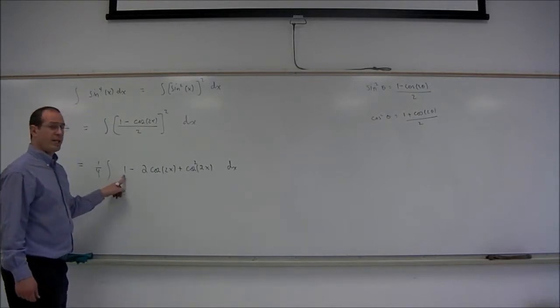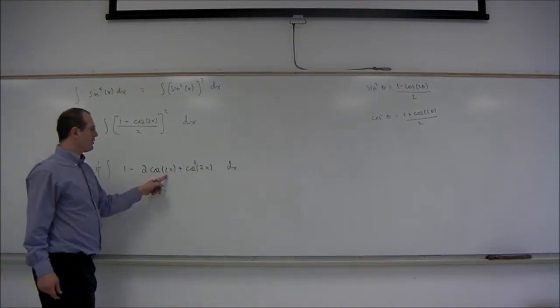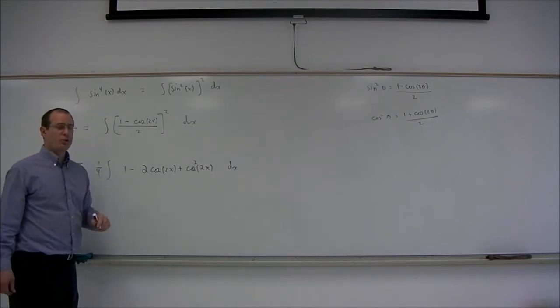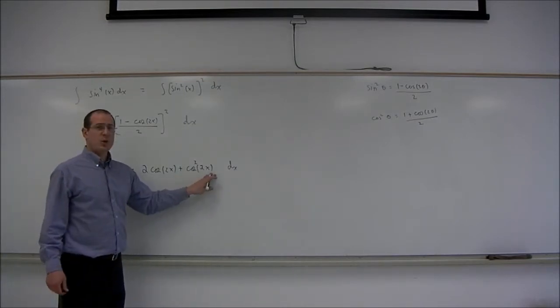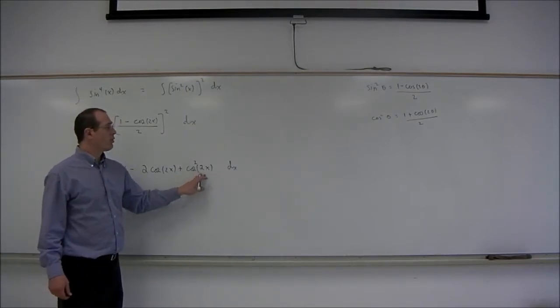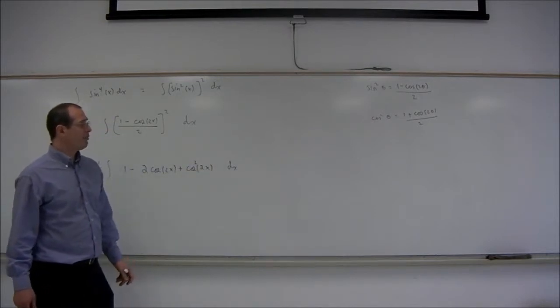From here, we can integrate 1 dx and cosine of 2x dx with no trouble. But cosine squared, that one requires the other identity that I wrote over here.